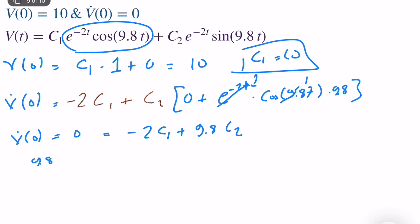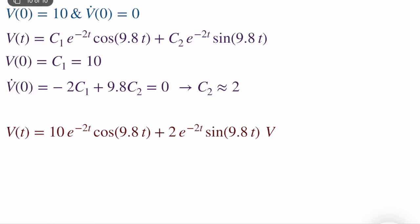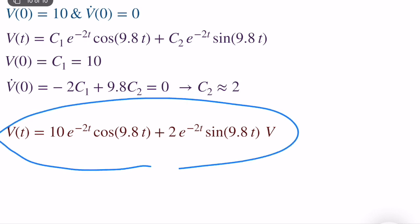Solving: C2 = 2·C1 / 9.8 = (2 × 10) / 9.8 ≈ 2. The final numerical solution is: V(t) = 10·e^(−2t)·cos(9.8t) + 2·e^(−2t)·sin(9.8t) volts. This is how you proceed when solving and analyzing a second order circuit with no input source such as a voltage or current source.